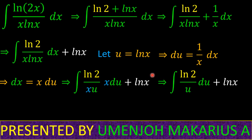so we can factor it out of the integral. We have ln 2 times the integral of 1 over u du. If we integrate this, we get ln u. But u equals ln x, so we get